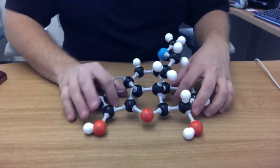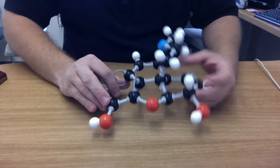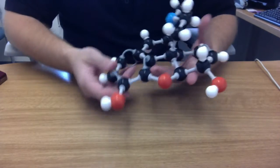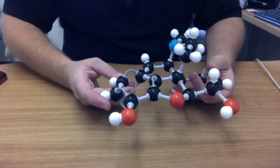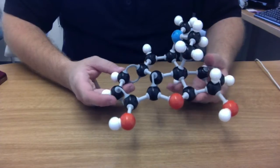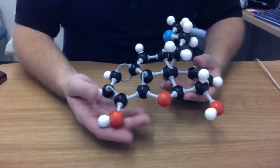And heroin is highly lipophilic, so it's able to pass through lipid membranes into the central nervous system where it is then metabolized back into morphine.